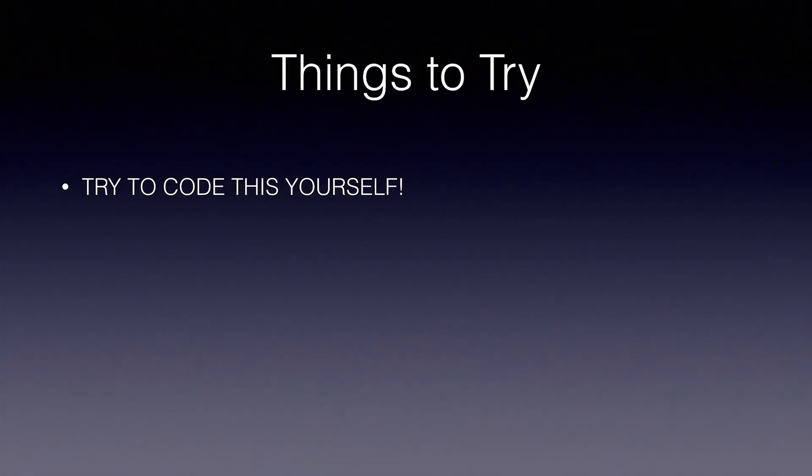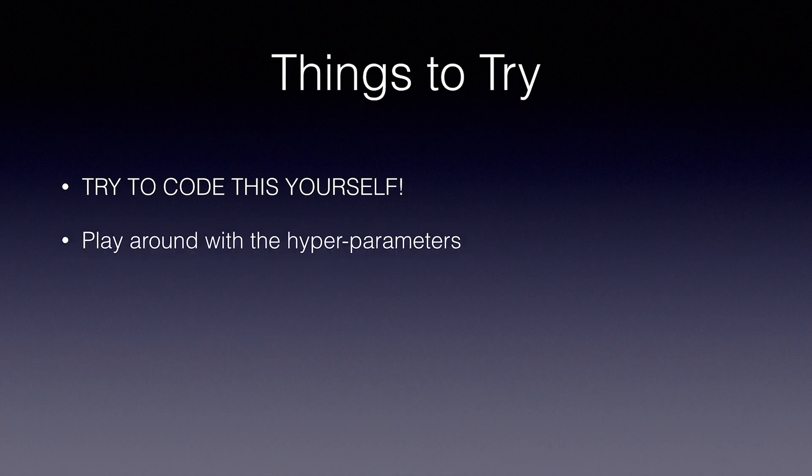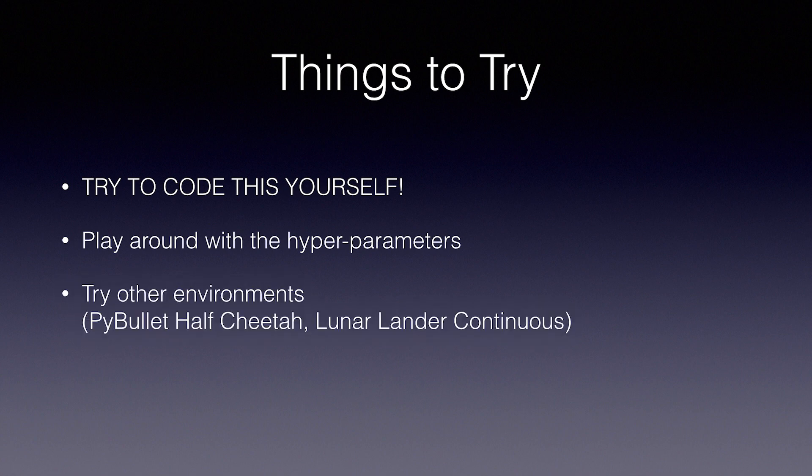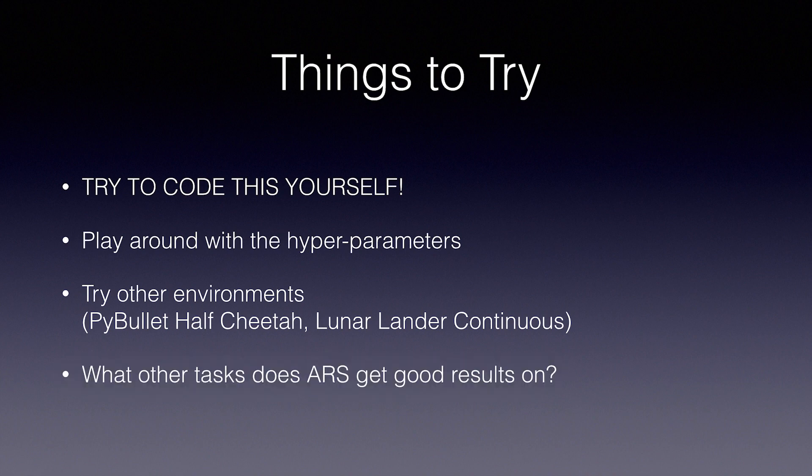As usual, I highly encourage you to code this yourself using the algorithms we went over in the slides. Play around with the hyperparameters. Can you improve the results? Try different environments like the PyBullet half cheetah or the lunar lander. What other tasks does augmented random search get good results on?